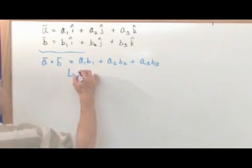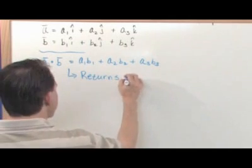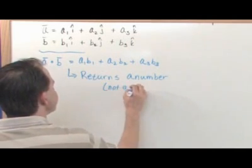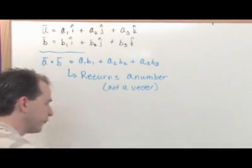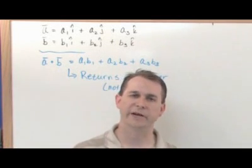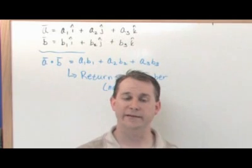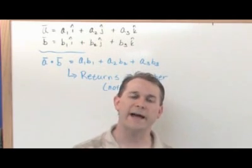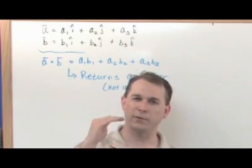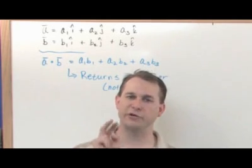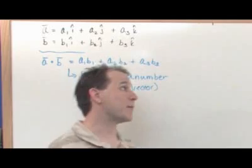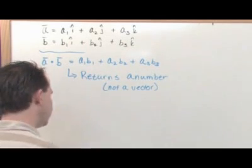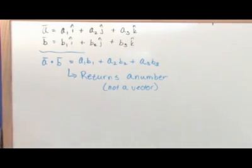So the dot product always returns a number, not a vector. That should raise your first question: why would you multiply two vectors together and never get a vector back? How can that possibly make any sense in the real world? We'll talk about it in a minute — I'm going to cover a little more territory and come back full circle to show you why that's useful and where this formula comes from, because right now I've just written it down on the board.